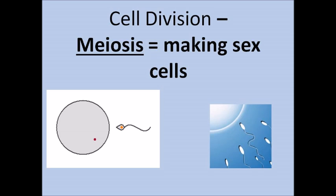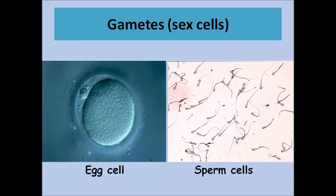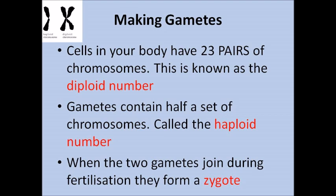The second type of cell division is called meiosis. Meiosis only happens when we make the sex cells — the sperm cells and the egg cells — which are also sometimes called gametes. Normal cells in your body have 23 pairs of chromosomes, so 46, which we call the diploid number. However, gametes are special: they only have half the sets of chromosomes, so we call them haploid cells. When two gametes join during fertilisation they form a zygote, which is a fertilised egg.